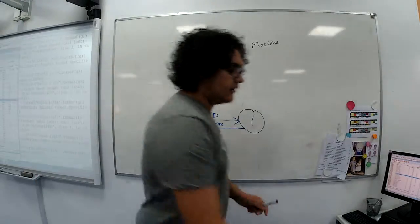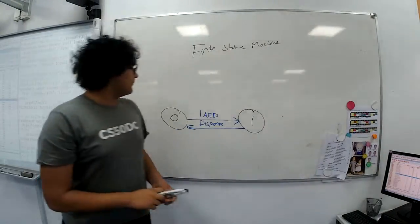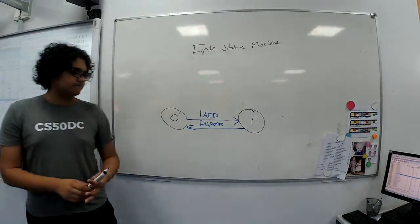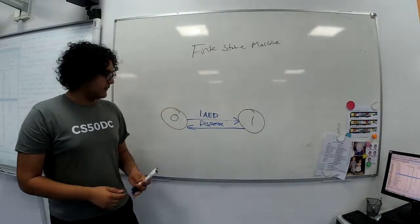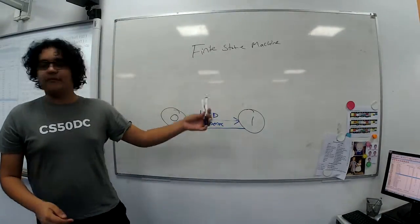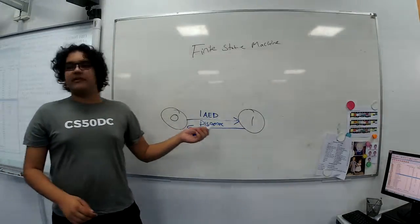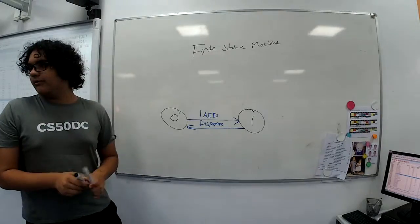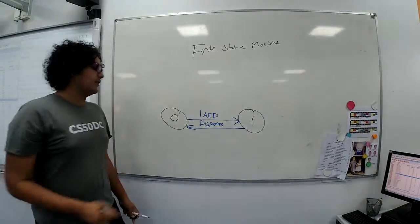So here are two of the states that you have in this machine, which is the water bottle vending machine. And there's a finite number of them, hence finite state machines. Now, this diagram is quite simple, and this is something you can visualize in your head. But they can be quite complicated, these diagrams that show finite state machines.